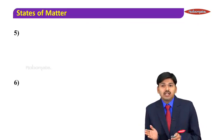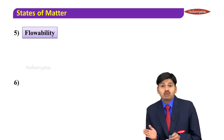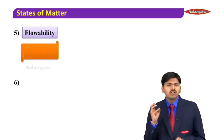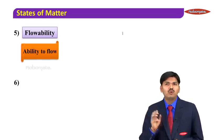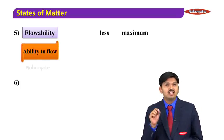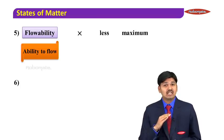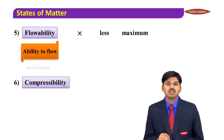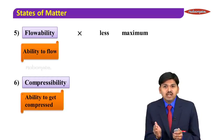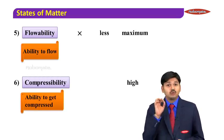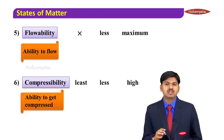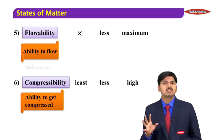Next, we will learn about flowability — the ability to flow. Flowability is maximum in gases, less in liquids, and least in solids. If I concentrate on compressibility — the ability to get compressed — it is very high in gases, less in liquids, and very least in solids.